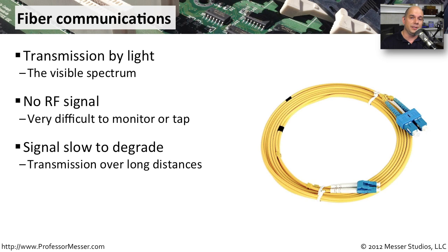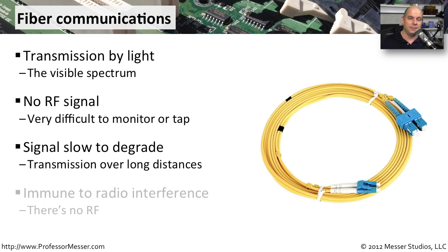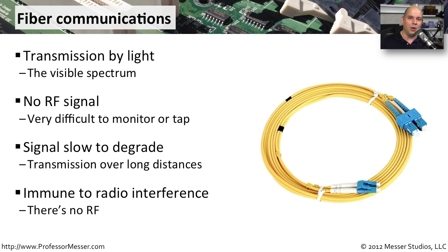Another good reason for using fiber is that the light inside the fiber degrades much slower than an electrical signal on a copper connection. So we can connect devices that are kilometers apart and still send data using fiber across those long geographic distances. And since we're not using any type of radio frequency or electrical signal, we don't get any type of common electrical interference. So in an environment with a lot of radio signals or electrical interference, you can simply use fiber and avoid all of those problems.